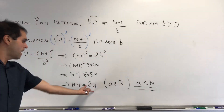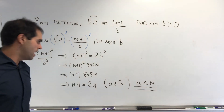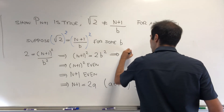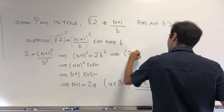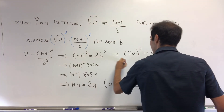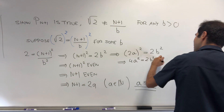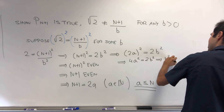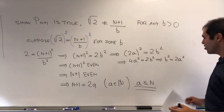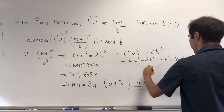Since n+1 equals 2a, let's go back to that identity and plug things in. We get (2a)² equals 2b², so 4a² equals 2b², and then b² equals 2a². So same as before: b² is even, and therefore b is even.